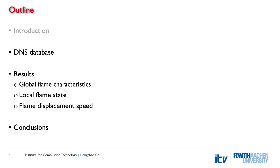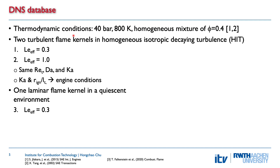In the simulation, we use thermodynamic conditions representative of hydrogen engines with a homogeneous lean mixture. We simulated two turbulent flame kernels in isotropic decaying turbulence. For the first one, we use transport models with differential diffusion, which results in an effective Lewis number of 0.3. For the second one, we artificially set all Lewis numbers equal to unity and disabled differential diffusion. These two kernels have the same turbulent Reynolds number, Damköhler number, and Karlovitz number, chosen as closely as possible to engine conditions.